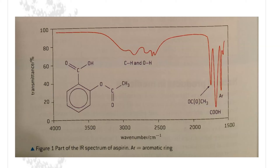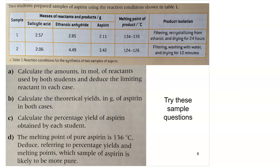Here is the IR spectrum for acetylsalicylic acid. We have our aromatic ring, we have our COO group, and we have our OCH3 group with three separate distinct peaks. That's what we would be looking for in a pure sample. Take a few minutes to try these questions — a solution will be posted.